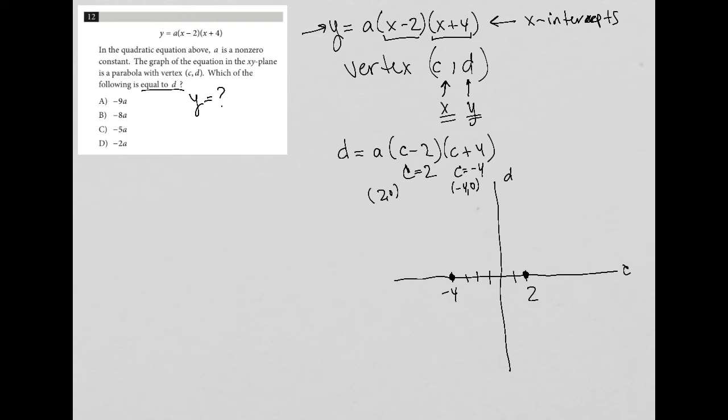So now if those are the x-intercepts, then my vertex, right? So back up here, since I don't know what c and d are yet, my vertex, the x value or the c value of my vertex must be halfway between the x-intercepts, right? Just given the shape of what a parabola looks like.